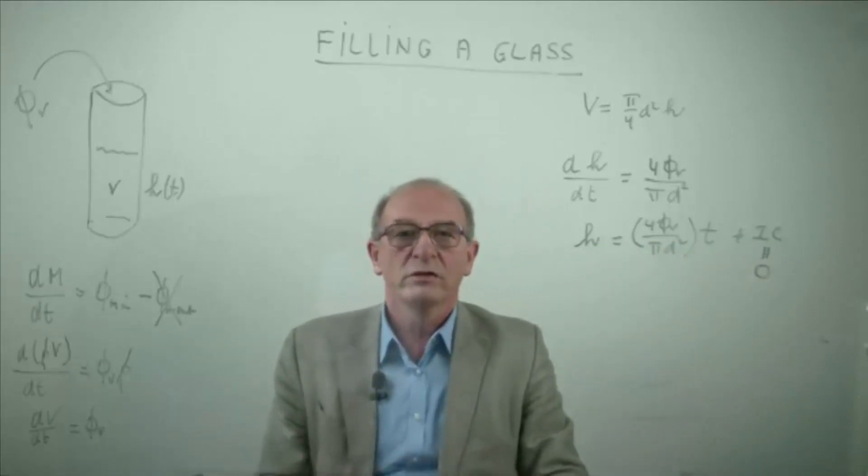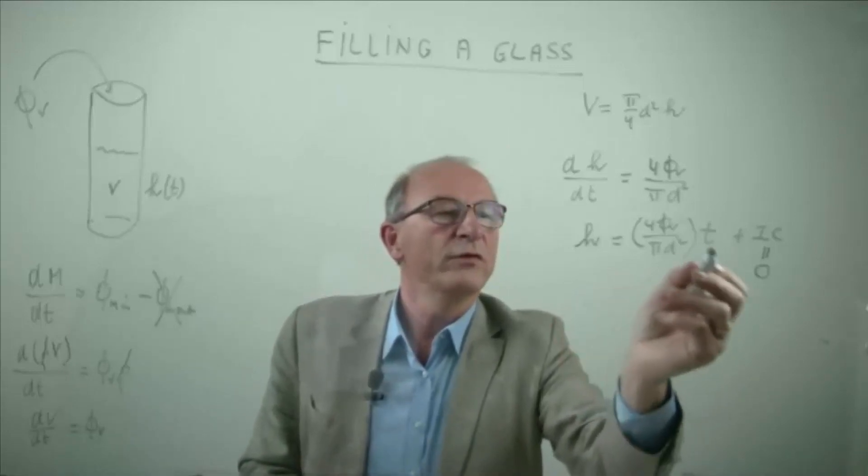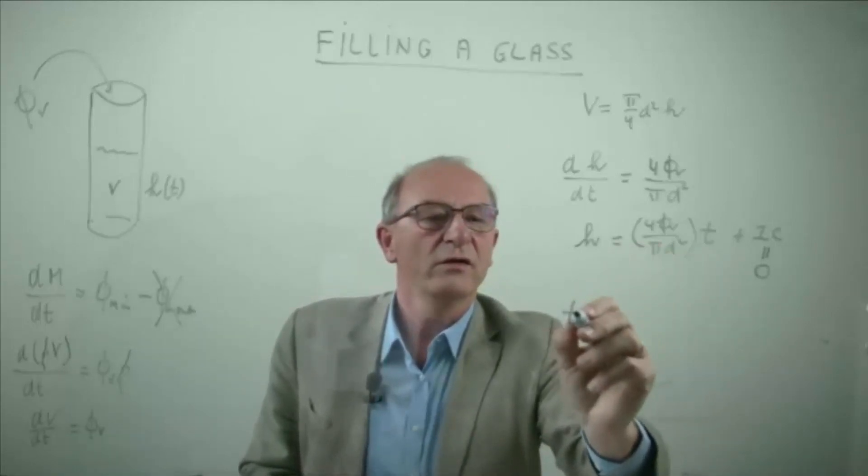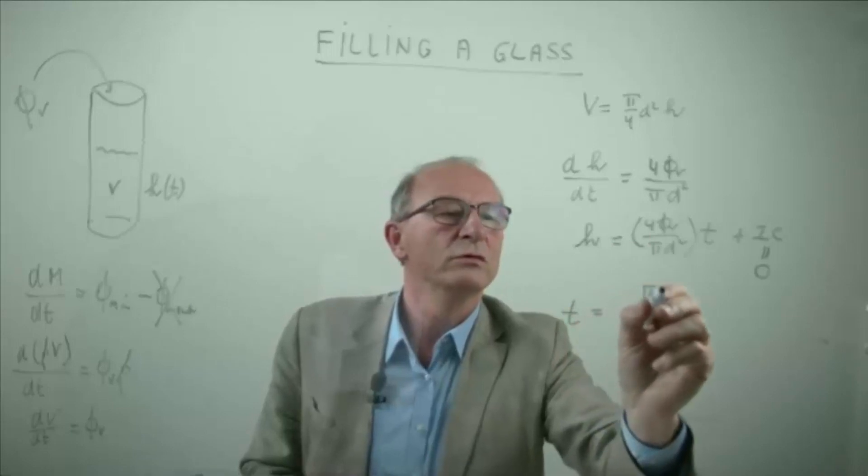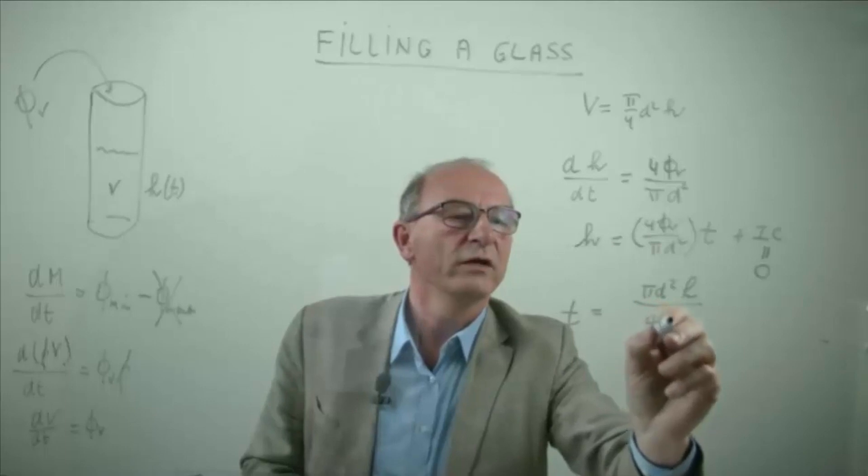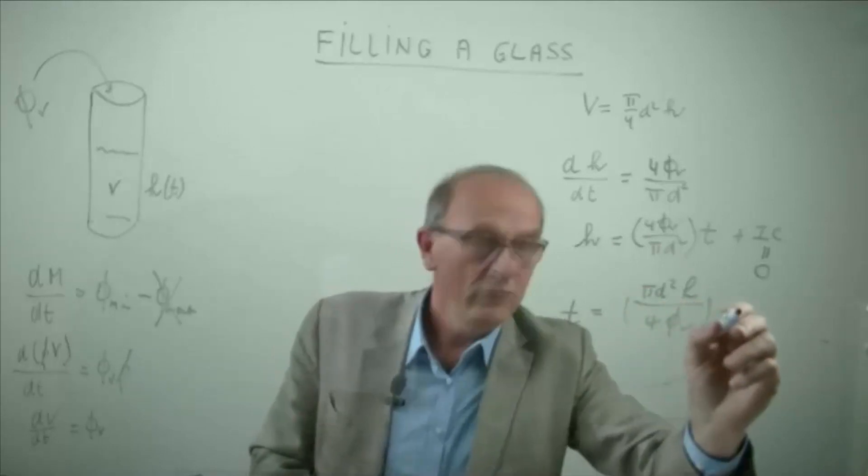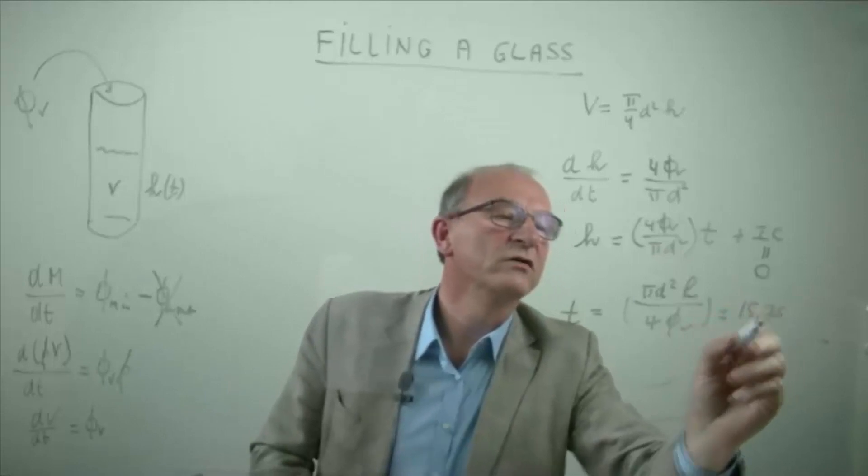If you fill in now the numbers in the example, you can derive the time because you have to rewrite this. You could say the time is equal to pi d squared multiplied by h divided by 4 phi. And that's about 15.7 seconds.